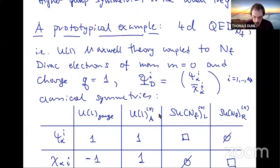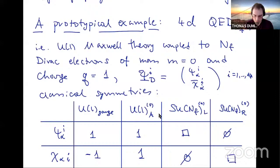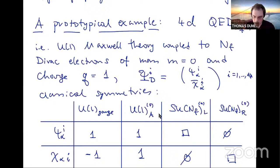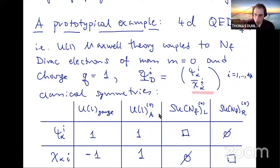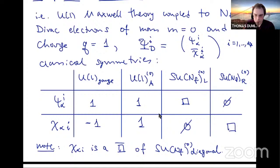The example I want to use to introduce this concept is four-dimensional QED — almost a textbook-level example, but generalized to NF massless flavors. We start with U(1) Maxwell gauge theory coupled to NF Dirac electrons of charge one and mass zero — NF different copies of the electron. In Dirac notation and in two-component Weyl spinor notation, we have NF of them. I'll go through with you what seems like an elementary exercise: looking at the well-known classical symmetries of this problem, then discussing anomalies, and then we'll learn something amusing.